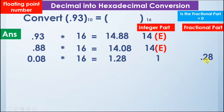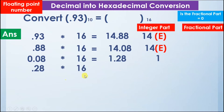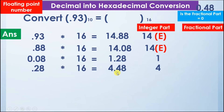The fractional part is not 0, so we take 0.28 and multiply it by 16, and we get the answer 4.48. So 4 is the integer part and 0.48 is the fractional part.